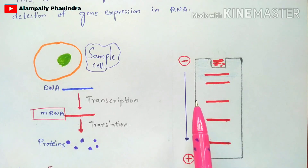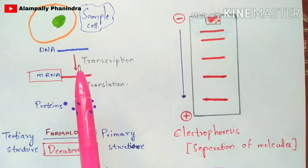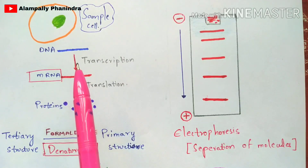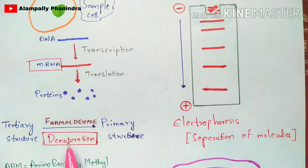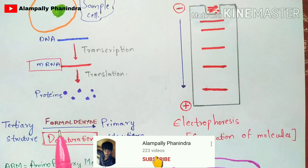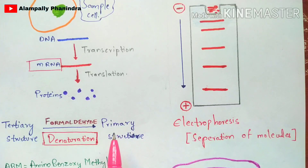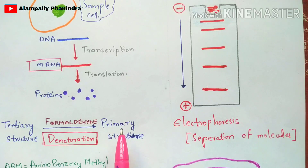Before gel electrophoresis, one important point to remember is that the extracted mRNA will be complex in structure — it is in a tertiary structure. To convert it into a primary structure, a process called denaturation is used. This is done using a chemical called formaldehyde, which converts the tertiary structure into a primary, linear structure. The mRNA molecules are thus collected in linear form.